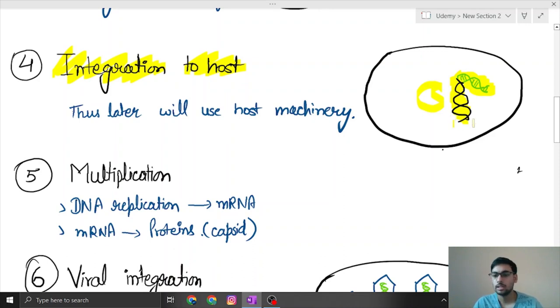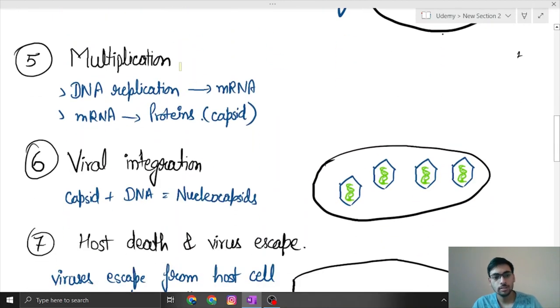Now after this comes the stage of multiplication. There will be DNA replication. DNA replication will happen so more number of DNAs will be formed and more number of mRNAs will also form.